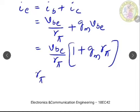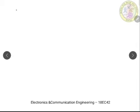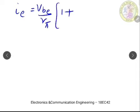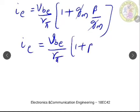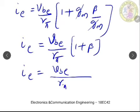We know that Rpi = beta / Gm. Substituting this, IE = (Vbe / Rpi)(1 + Gm × beta / Gm). The Gm terms cancel, so the emitter current component becomes IE = (Vbe / Rpi)(1 + beta), which can also be written as Vbe / (Rpi / (1 + beta)).